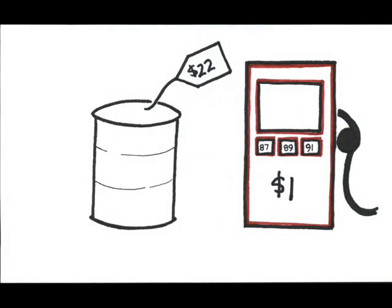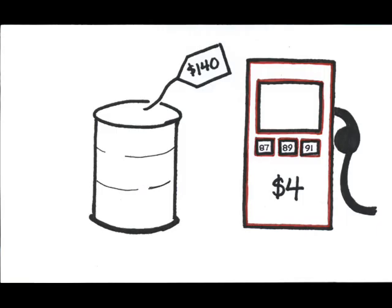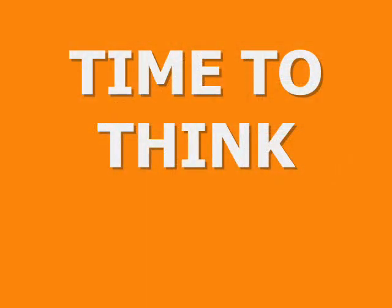In the 1990s, gas was cheap. Oil was $22 a barrel, and gas was about $1 a gallon. And demand for cars, especially trucks and SUVs, was high. In 2008, oil hit $140 per barrel, and gasoline hit $4 plus per gallon. How did this affect the demand for cars, especially the gas guzzlers?